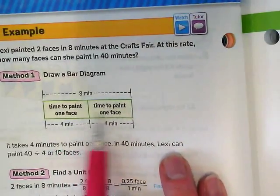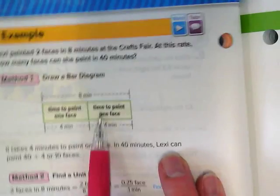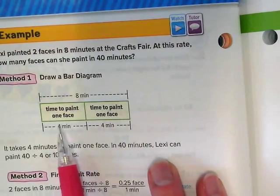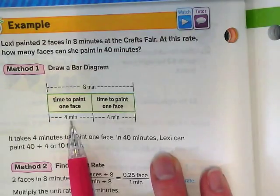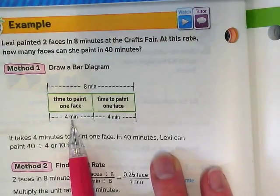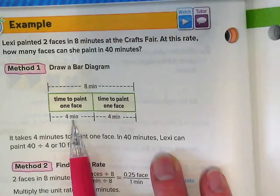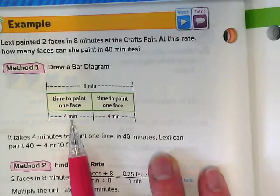They've done a bar diagram to show us what the eight minutes look like. It takes her four minutes to do one face. We need to get that down to a unit rate of one minute. She can't finish a whole face in one minute because it takes her how long to do a whole face? Four minutes.